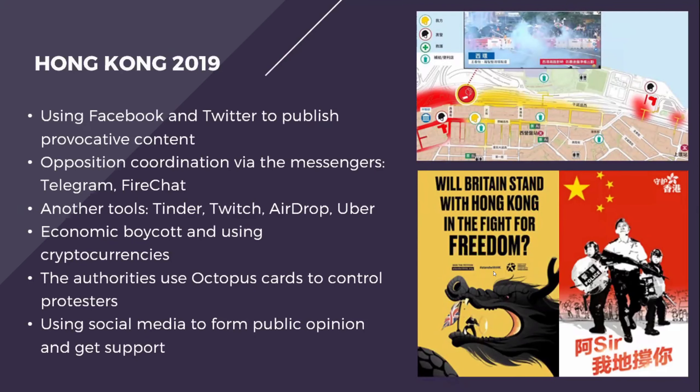The next thing I'd like to talk about is Hong Kong. The summer and early autumn of 2019 was a season of protest for Hong Kong. The large-scale demonstrations were caused by the attempts of city authorities to start a legal merge with mainland China and adopt an extradition law. Social media such as Facebook and Twitter were used to publish provocative photos and videos of police aggression. The main opposition communication and coordination were carried out through messengers such as Telegram, WhatsApp, Signal, and FireChat. Telegram has an encryption function allowing users to stay anonymous; its channels contained information about rally plans.